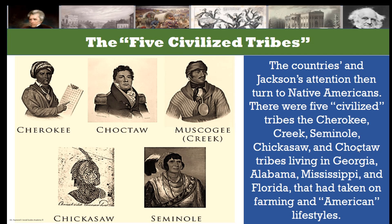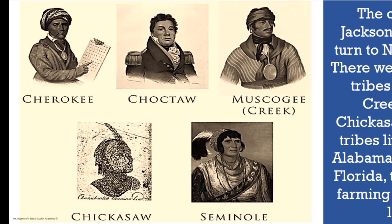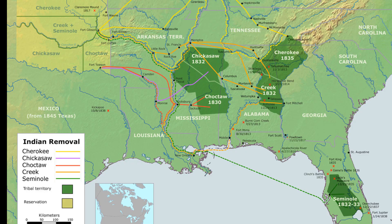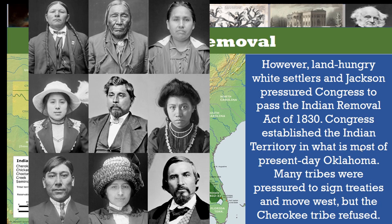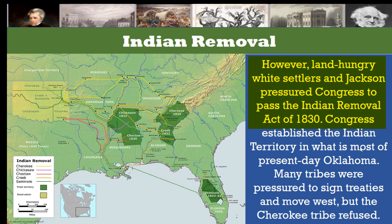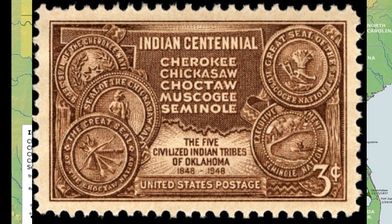With the Nullification Crisis settled, the nation and Jackson turned their attention to Native Americans. As America was expanding westward, they were running into Native tribes who seemed to be in their way. There were five so-called civilized tribes — the Cherokee, Creek, Seminole, Chickasaw, and Choctaw — living in Georgia, Alabama, Mississippi, and Florida, who had taken on farming and American lifestyles. However, land-hungry white settlers and Jackson pressured Congress to pass the Indian Removal Act of 1830.